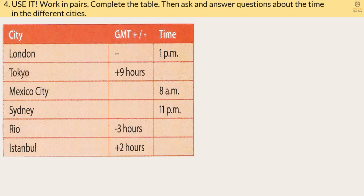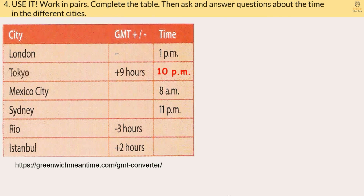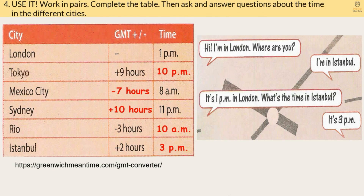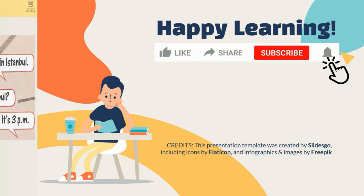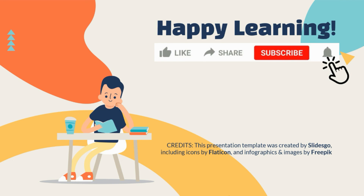Exercise 4 — Use it: Work in pairs, complete the table, then ask and answer questions about the time in different cities. To help you complete the table, click the link in the description box to find out how many hours ahead of or behind GMT each city is. Now check your answers. Do like and subscribe to see more lessons like this. Happy learning!